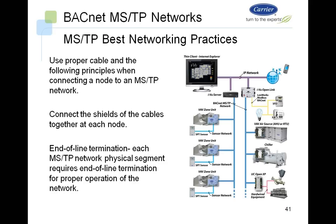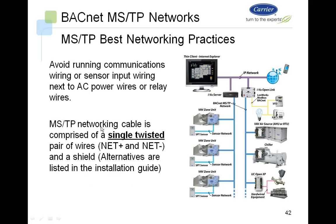Best network practices: use proper cable and connect the shields of the cables together at each node. Use end-of-line termination at the beginning and end of each physical segment. Avoid running communication wiring or sensor input wiring next to AC power lines or relays. The MSTP network cable is a single twisted pair — network positive, network negative, and a shield.